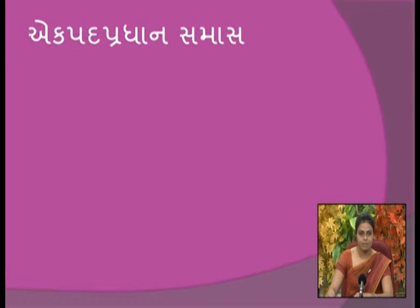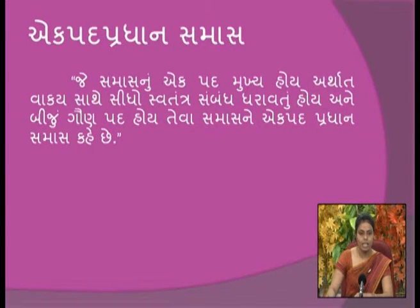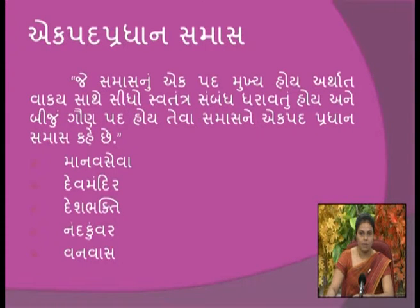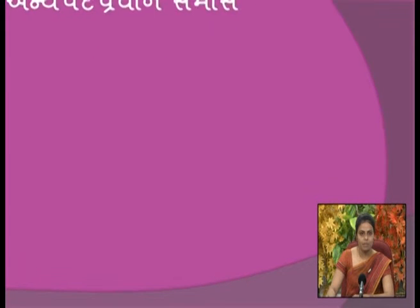એકપદ પ્રધાન સમાસ એટલે જે સમાસનું એક પદ મુખ્ય હોય, અર્થાત વાક્ય સાથે સીધો સ્વતંત્ર સંબંધ ધરાવતું હોય, અને બીજું પદ ગૌણ હોય. ઉદાહરણ: માનવ-સેવા, દેવ-મંદિર, દેશ-ભક્તિ, નંદ-કુવર, વનવાસ. ત્રીજો પ્રકાર છે અન્યપદ પ્રધાન સમાસ.